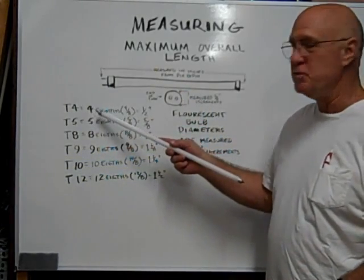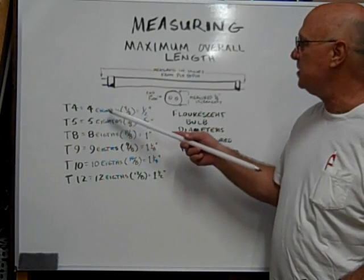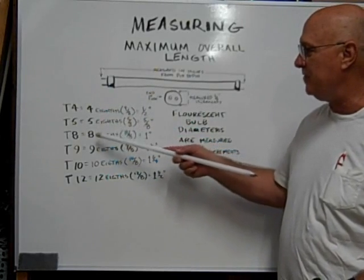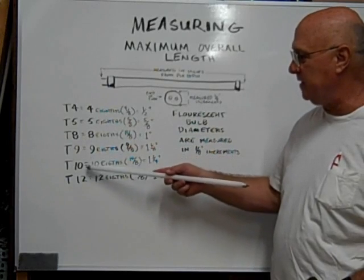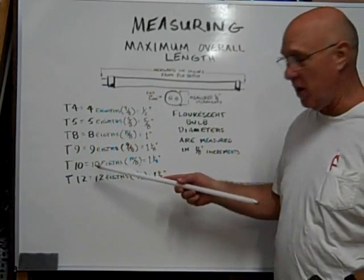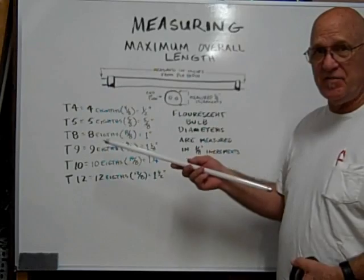Fluorescent tubes come in a variety of size diameters: T4, T5, T8, T9, T10, and T12. This is a T5.